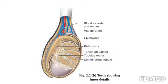Before going into the process of spermatogenesis, we should remember a few points from the male reproductive system. Each testis consists of highly coiled testicular tubules or seminiferous tubules, which form 80% of the testicular substance — the site for sperm production. The site for sperm production is the seminiferous tubules.